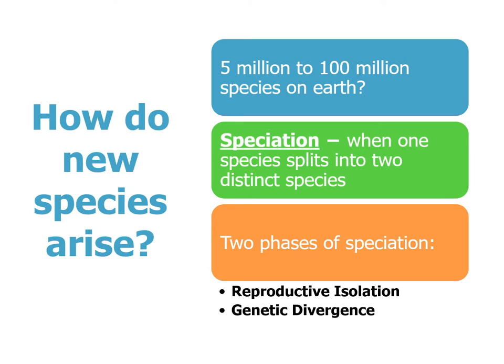How do new species arise? Between 5 million and 100 million species currently live on Earth — that seems like a big range because we haven't found them all, and new species are still being discovered every day. Speciation is when one species splits into two distinct species, and it has two distinct phases: reproductive isolation, which we've talked about, and genetic divergence. Reproductive isolation is the separation of populations from one another, and what inevitably comes from that is genetic divergence, where different populations start to evolve separately and accumulate physical and behavioral features over time.